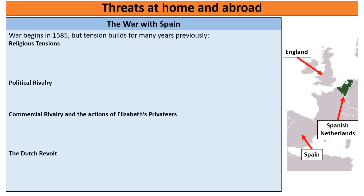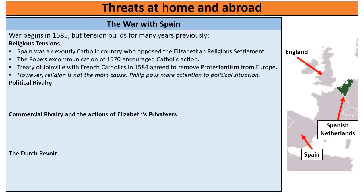Perhaps the most obvious cause is religious tensions. Spain was a devoutly Catholic country; England, since Elizabeth became Queen, is Protestant. The Pope excommunicated Elizabeth in 1570, giving Catholic countries permission and encouragement — almost an order — to try and replace her. We also have the Treaty of Joinville in 1584 between Spain and French Catholics, who agreed they were going to try and remove Protestantism from the face of Europe.